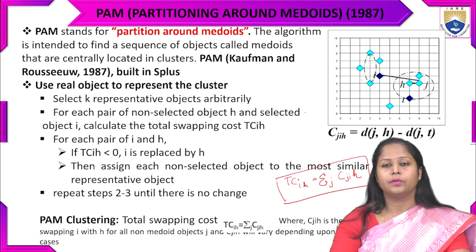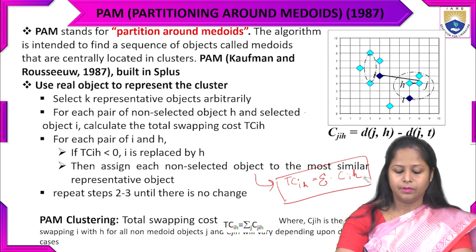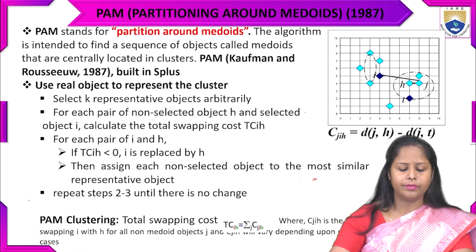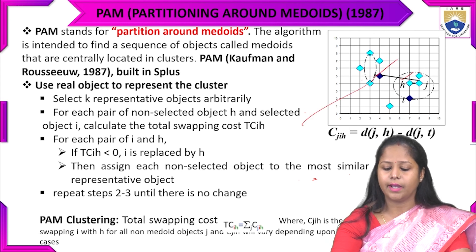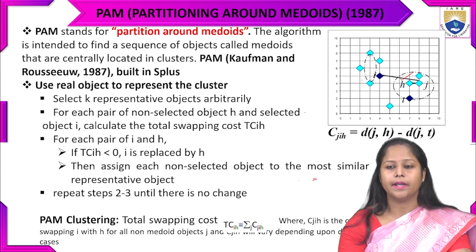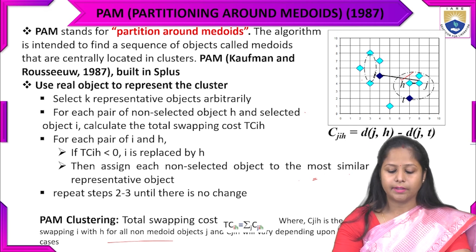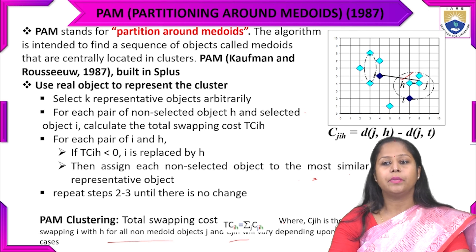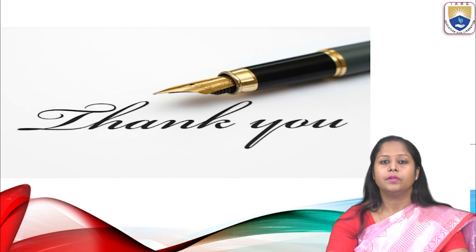The total swapping cost formula is: TC(i,h) = summation of C(j,i,h) over all j, where C(j,i,h) is the cost of swapping i with h for all non-medoid objects j. The value of C(j,i,h) depends on different cases. This completes the second part of clustering.